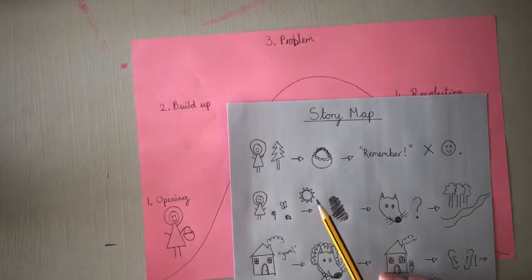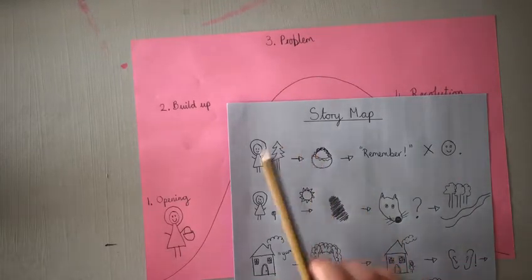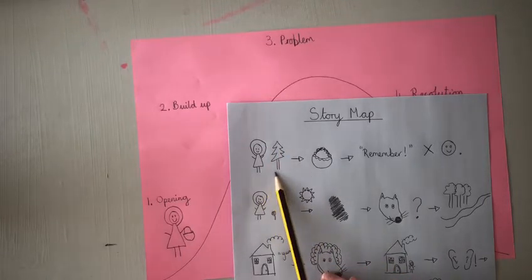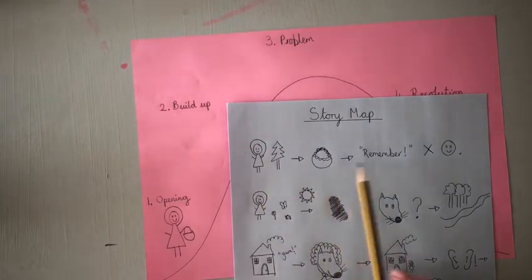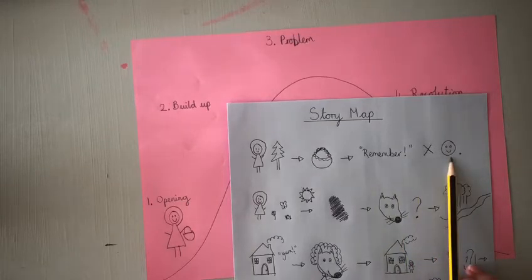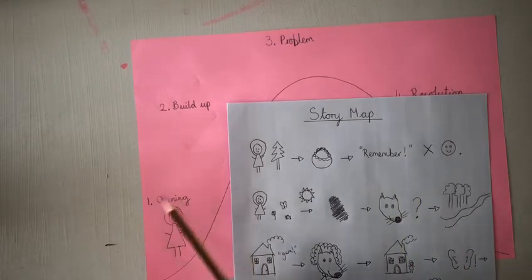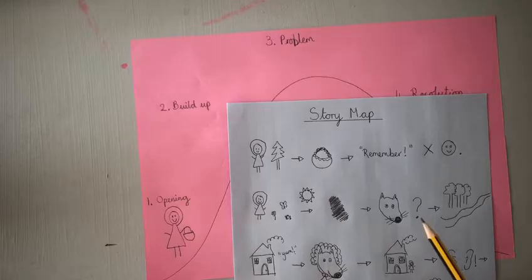So I'm using my story map to remind me of the different things that happened at the beginning of the story. I've got Little Red Riding Hood and then she's got the basket and her mum's saying, remember, don't talk to strangers. So that's happening at the opening, at the very beginning of the story.